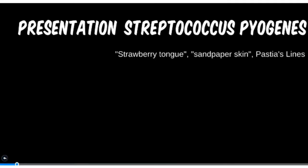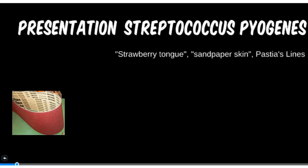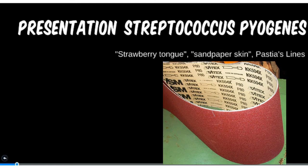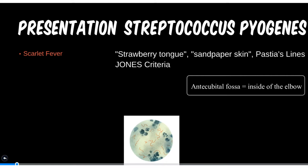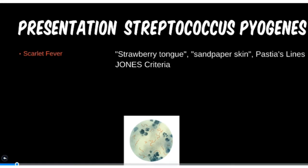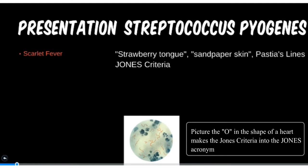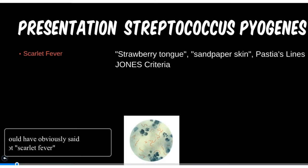If you recall the many disease states of Staph aureus infections, this one should be much easier. Take a second to name off as many Strep pyogenes diseases as you can. Now, which diseases are more specific to strep that are not seen in staph? How about if a child with a strawberry tongue, sandpaper skin, and Pastia's lines shows to the office? The first two should be a dead giveaway — the patient presents with scarlet fever. Pastia's lines are petechial lines seen in the antecubital fossa. The Jones criteria is a mnemonic for joints, carditis, nodules, erythema marginatum, and Sydenham's chorea — all secondary symptoms and diseases seen in patients with scarlet fever, helping to pinpoint this diagnosis.